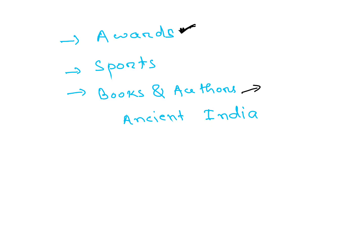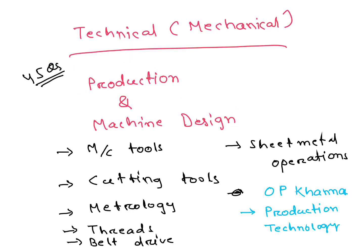For the technical paper — Mechanical section — there are 45 questions. Simple questions only, no numericals — maximum 3 to 4 simple numerical questions. Around 90% of questions are from two subjects: Production Technology and Machine Design.